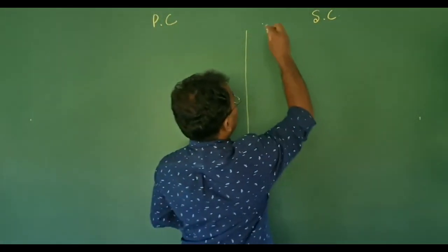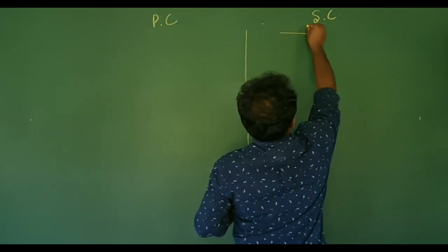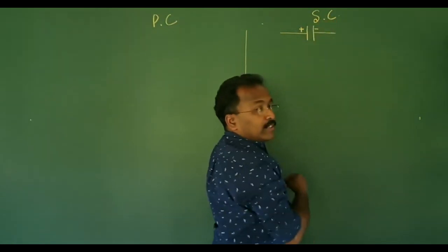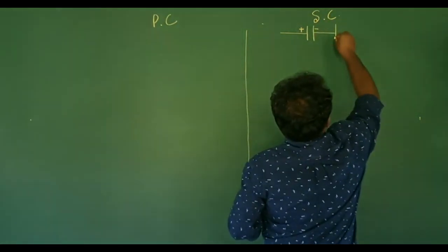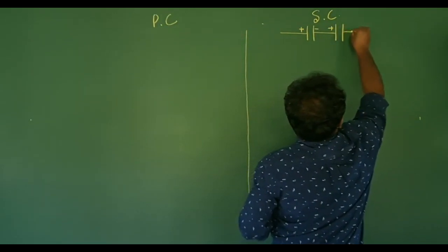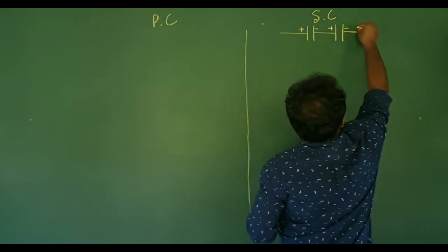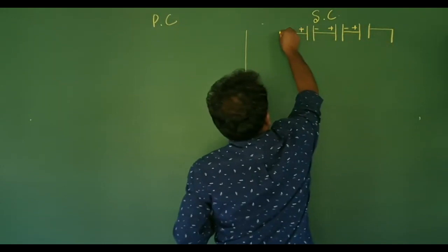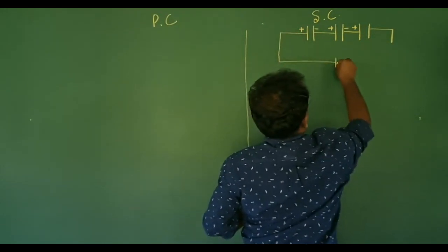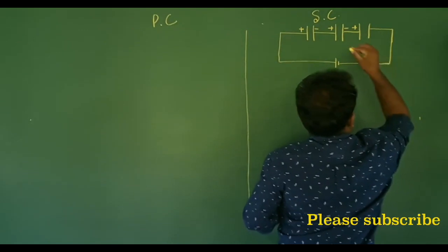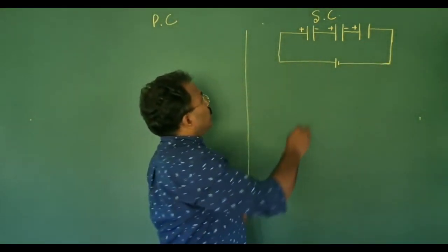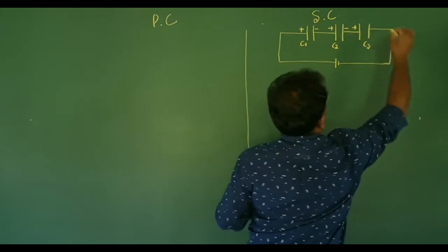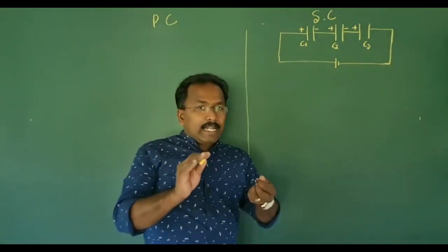How does the series combination function? We represent one capacitor here — that is positive and negative. The negative of one capacitor connects to the positive of the next. This is the series combination with three capacitors: C1, C2, and C3.